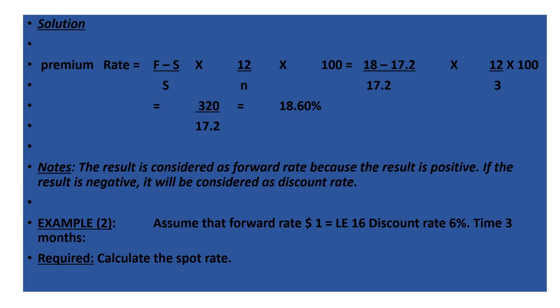The forward rate formula is: forward rate minus spot rate, divided by spot rate, times 12 over n, times 100. For example: 18 minus 17.2.